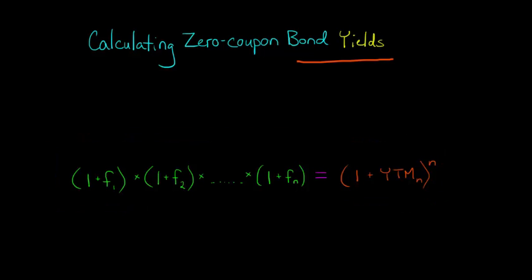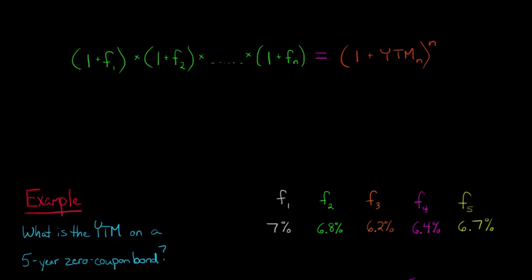So let's jump into an example, and I'll show you how it works. So let's say that you didn't know the yield on a five-year zero-coupon bond, but you did know the forward rates. Here I've got the forward rates for the next five years.